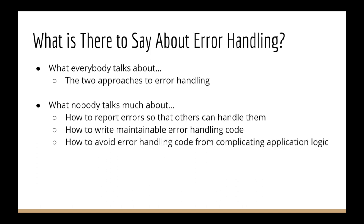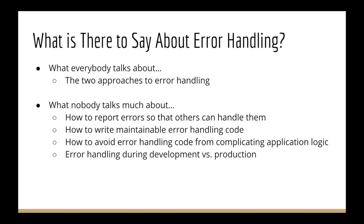What happens if, instead of you getting an error from some function you called, you are the originator? What do you do? How do you report the error to whoever calls you? Nobody says much about the Pythonic way to do that. How to write error handling code that is not a mess, how to keep it separate from your application logic — nobody talks much about that. And if you're doing something for real, with paying customers, you need a strategy for production versus development.